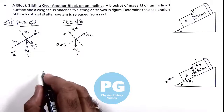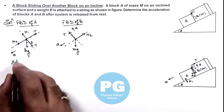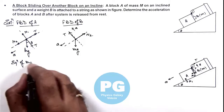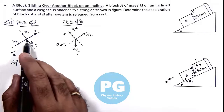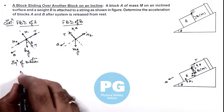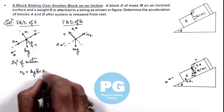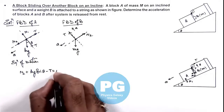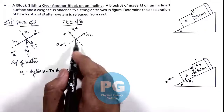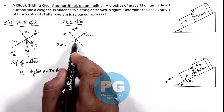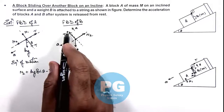Now writing the equations of motion: for block A along the incline, we can write N2 plus Mg sine theta minus T equals M·ay. This is the first equation. Normal to the incline gives the second equation. For block B, we can write two equations — one along the incline and one normal to the incline.